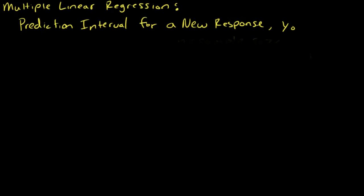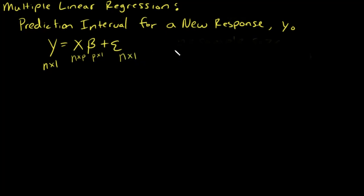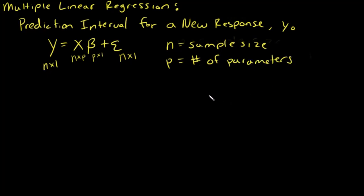In this video I'm going to discuss how to construct a prediction interval for a new response, y naught. For the multiple linear regression model, recall our model is y equals X times beta plus epsilon, where y is our response variable — an n by one vector, X is our design matrix and it's n by p, beta is all of our model parameters at p by one, and epsilon is our model error terms, which are n by one. We have n, which is our sample size, and p, which is the number of parameters. We've made the assumption that epsilon follows a normal distribution with mean zero and variance sigma squared times I, where I is the n by n identity matrix.